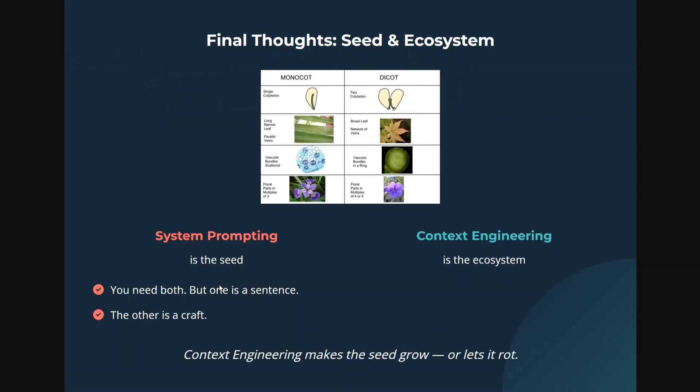Final thoughts — seed and ecosystem. System prompting is the seed while context engineering is the ecosystem. You need both, but one is just a sentence — more of a rule-based thing — while the other is a craft. Context engineering makes the seed grow, or lets it rot. The success of system prompting depends completely on how you do context engineering. I hope you understood the difference. We have already covered a few more tutorials on context engineering in this playlist — you can check those out as well. Thank you so much.